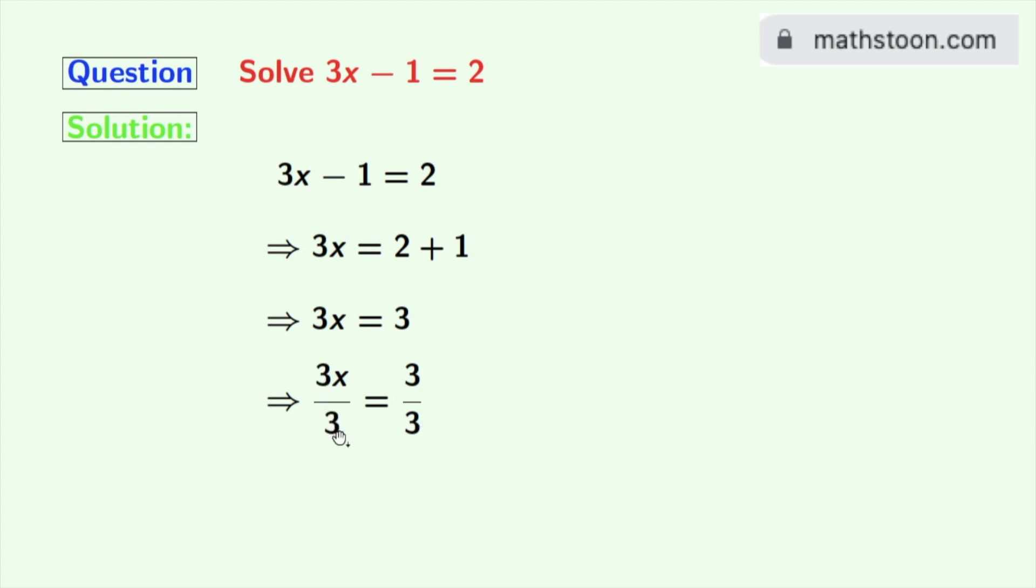On both sides, the 3s get cancelled. So finally we get x equals 1, and this is our final answer.